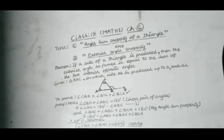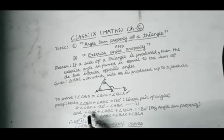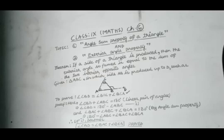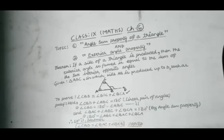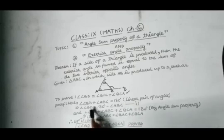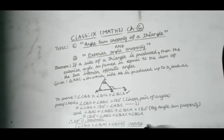Now, in triangle ABC, using the angle sum property, we have angle BAC plus angle ABC plus angle BCA equals 180 degrees. Therefore, 180 degrees minus angle ABC becomes angle BAC plus angle BCA. That's why the right-hand side of equation one becomes angle BAC plus angle BCA. Hence, angle CBD equals angle BAC plus angle BCA. That's proved.